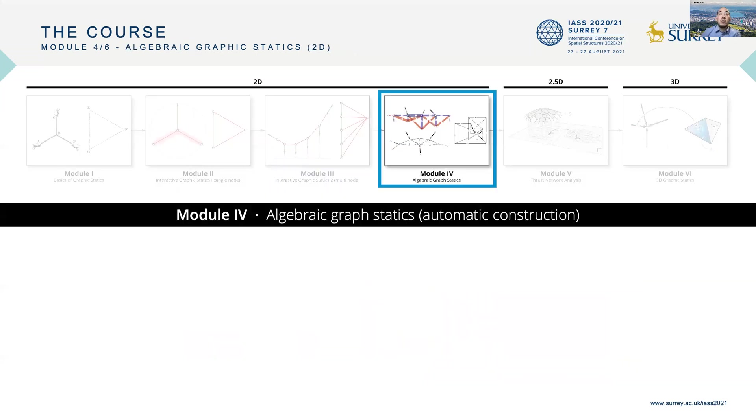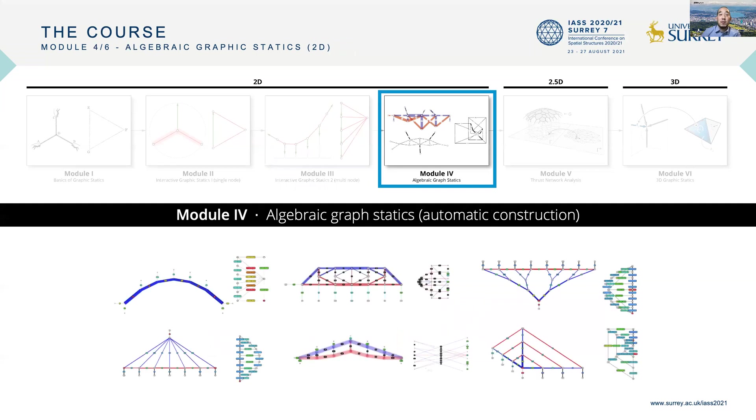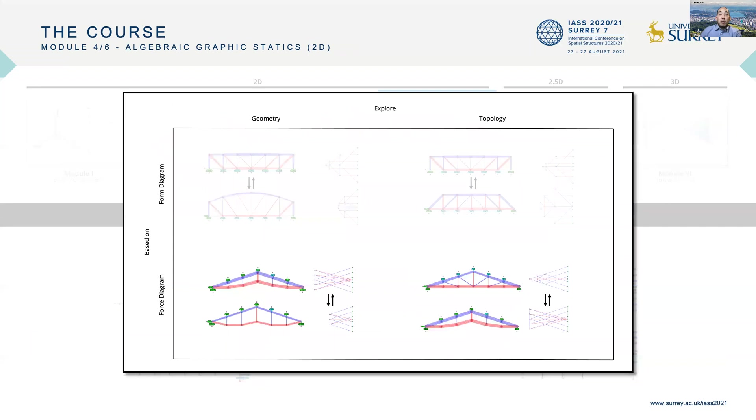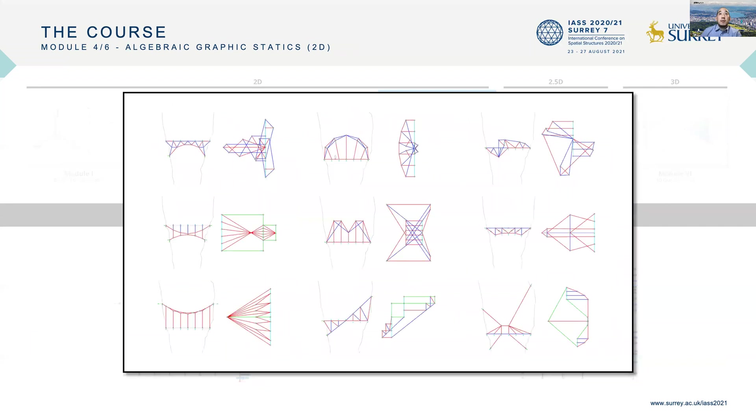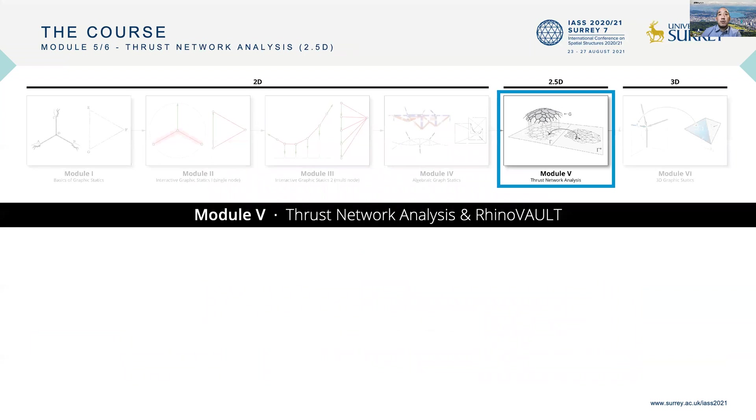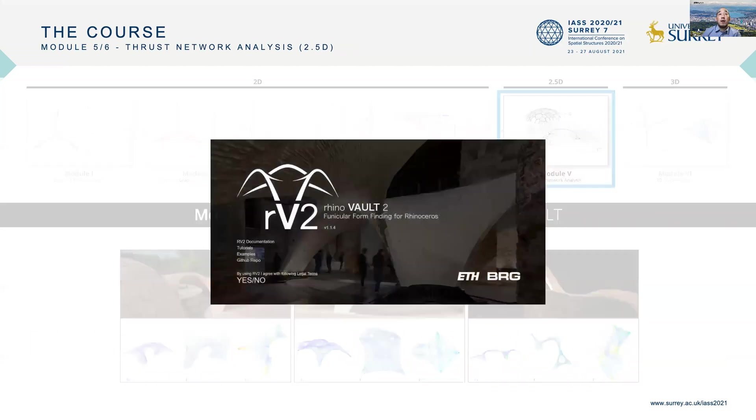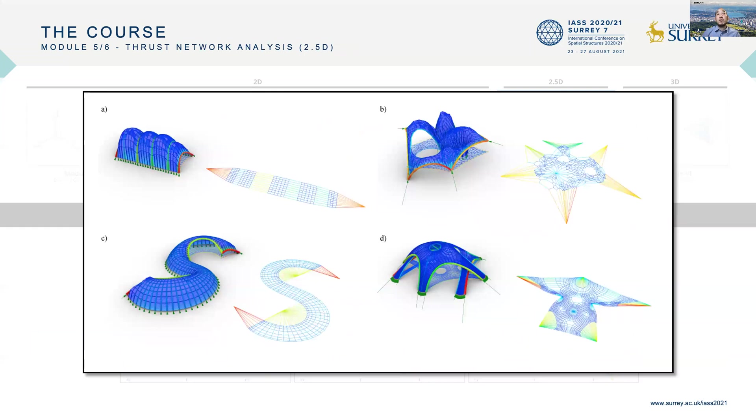In Module 4, students learn how to use algebraic graphic statics where the form and force diagrams can be constructed automatically to explore much more complex structures using geometry and topology. In Module 5, students learn how to use form and force diagrams in 2.5D to explore form-finding of shell structures using form and force diagrams of the horizontal projection of these complex shell structures.